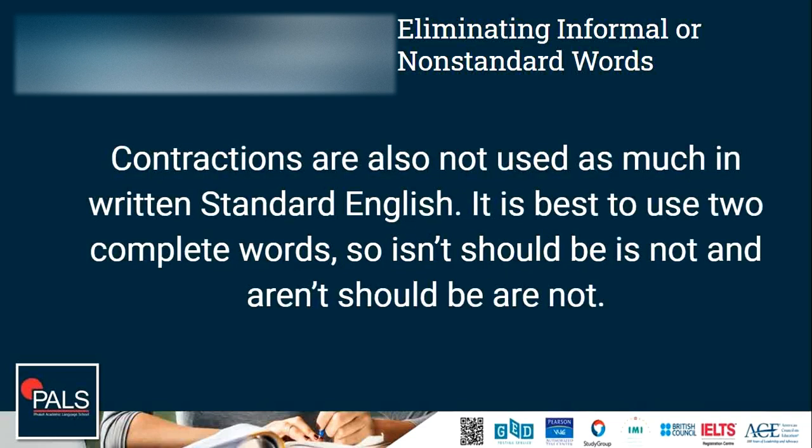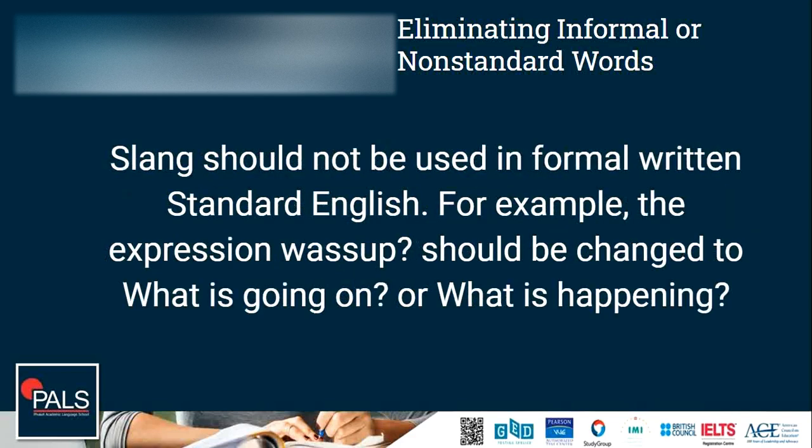Contractions are also not used as much in written standard English. It is best to use two complete words — so 'isn't' should be 'is not', and 'aren't' should be 'are not.' Also, slang should not be used in formal written standard English. For example, the expression 'what's up?' — you don't use that. It should be changed to 'what is going on?' or 'what is happening?' instead.